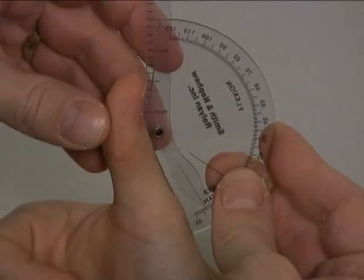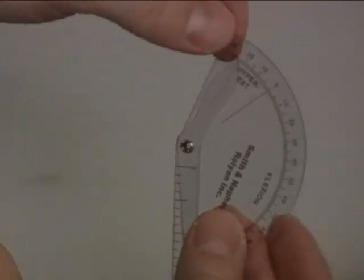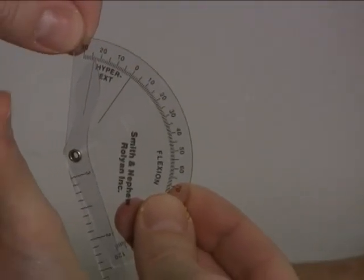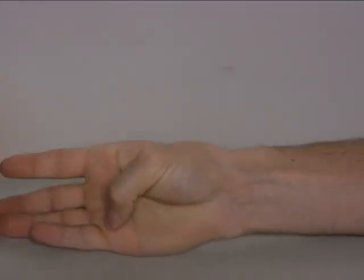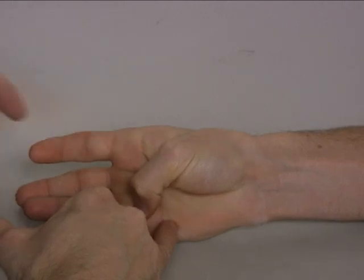Can you get any farther back than that? That's about it. Very good. So we have about 23 degrees of hyperextension at the thumb IP joint. And then can you bring your thumb all the way down? Try to touch way back here. Get it really tight.